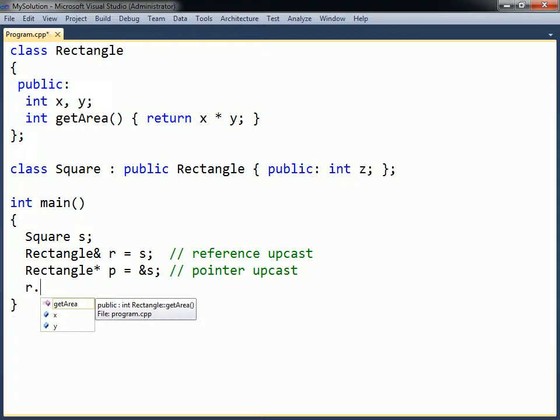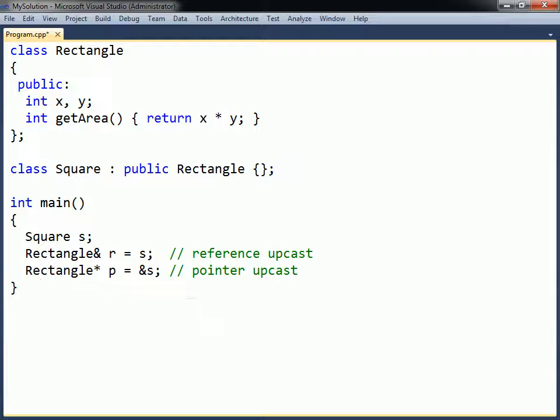When using Rectangle's interface, the square object will be viewed as a rectangle, so only Rectangle's members can be accessed. A derived class can be used anywhere a base class is expected.